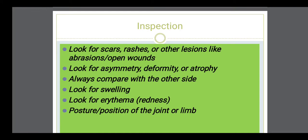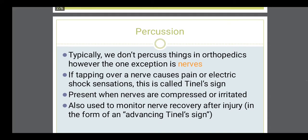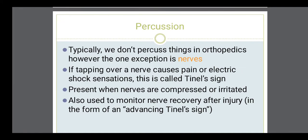First, inspection means looking, observing, seeing with the eye. We have to look for scar, rash, any lesions, asymmetry, deformity, or atrophy, and compare both sides — both limbs are examined simultaneously. Look for swelling, any redness (erythema), and posture and position of the joint or limb. Normally, we do not percuss, except the nerves — a percussion hammer is used when doing a focused neurological assessment in musculoskeletal examination.